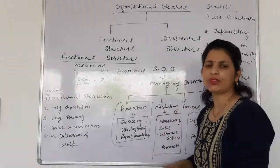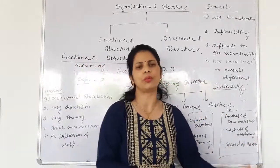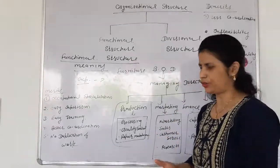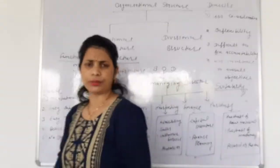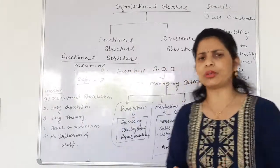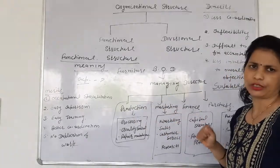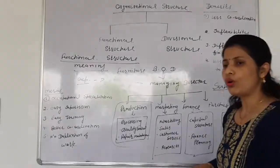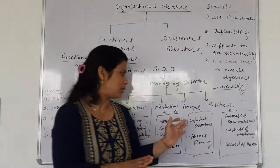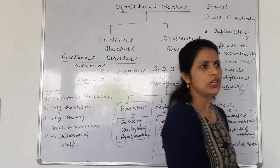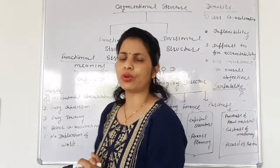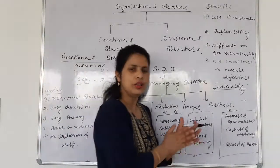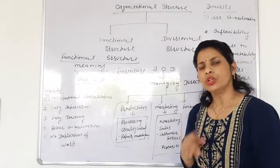There is no duplication of work. Now, inflexibility means that if I want to change a decision, in functional structure we can't change our decision frequently because all departments are interdependent. Without discussion with other departments we can't change our decision, because our decision can affect another department. Also, employees can't transfer — marketing department employees can't transfer to purchase, so there is inflexibility in functional structure.